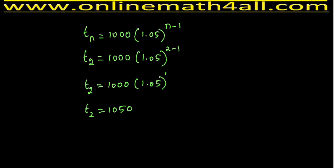In our problem, we need to find the value of the deposit at the end of 12 years — that is, the end of the 12th year. Since we are finding the value at the end of the 12th year, we need to find the principal for the 13th year. So we have to plug n = 13 into the geometric sequence formula.